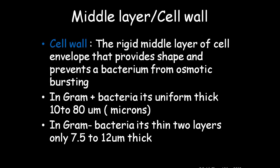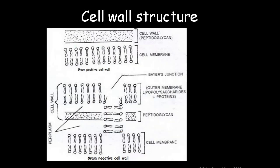The middle layer or cell wall is the rigid middle layer of the cell envelope that provides shape and prevents bacteria from osmotic bursting. The gram-positive bacteria have a uniform thick layer of 10 to 80 nanometers, while gram-negative bacteria have a thin two-layer structure of 7.5 to 12 nanometers. In gram-positive bacteria the peptidoglycan layer is thick; in gram-negative bacteria it is a thin layer with an outer membrane, plasma membrane, and a periplasmic space.